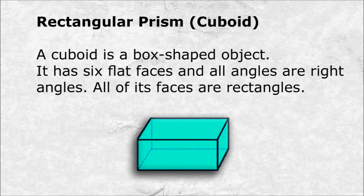Rectangular prism, also called a cuboid. A cuboid is a box-shaped object. It has six flat faces and all angles are right angles. All of its faces are rectangles.